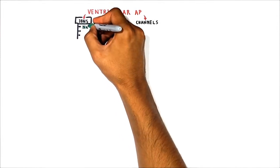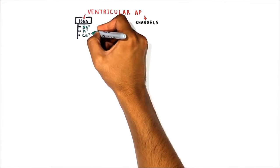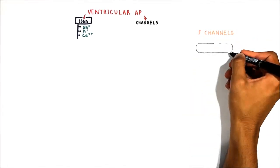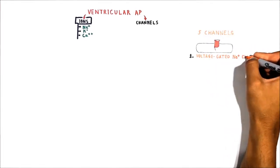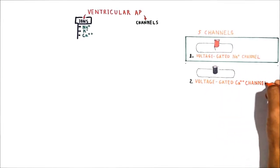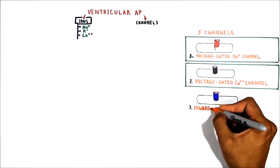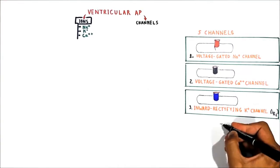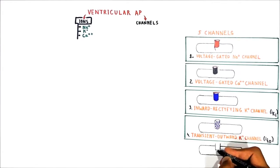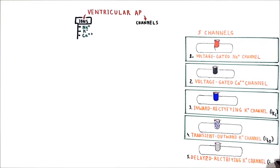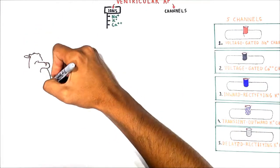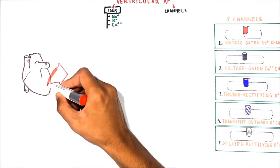Whenever we talk about action potentials, we should first know the main ions and channels through which these ions move and generate the action potential. The main ions participating in the generation of the action potential in ventricular muscle are sodium, potassium, and calcium. Here are the five different channels in ventricular myocytes: voltage-gated sodium channel, voltage-gated calcium channel, inward rectifying potassium channel (IK1 channel), transient outward potassium channel (ITO).